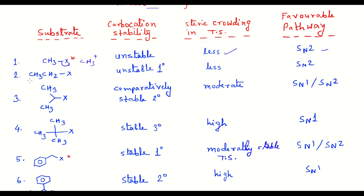If we replace one hydrogen by a CH3 group, the corresponding carbocation will be a primary carbocation with only three hyperconjugable hydrogen atoms. The stability will not be very high, so SN1 will not be favorable. However, the transition state will be less crowded and the SN2 pathway will be favored for this primary halide molecule as well.